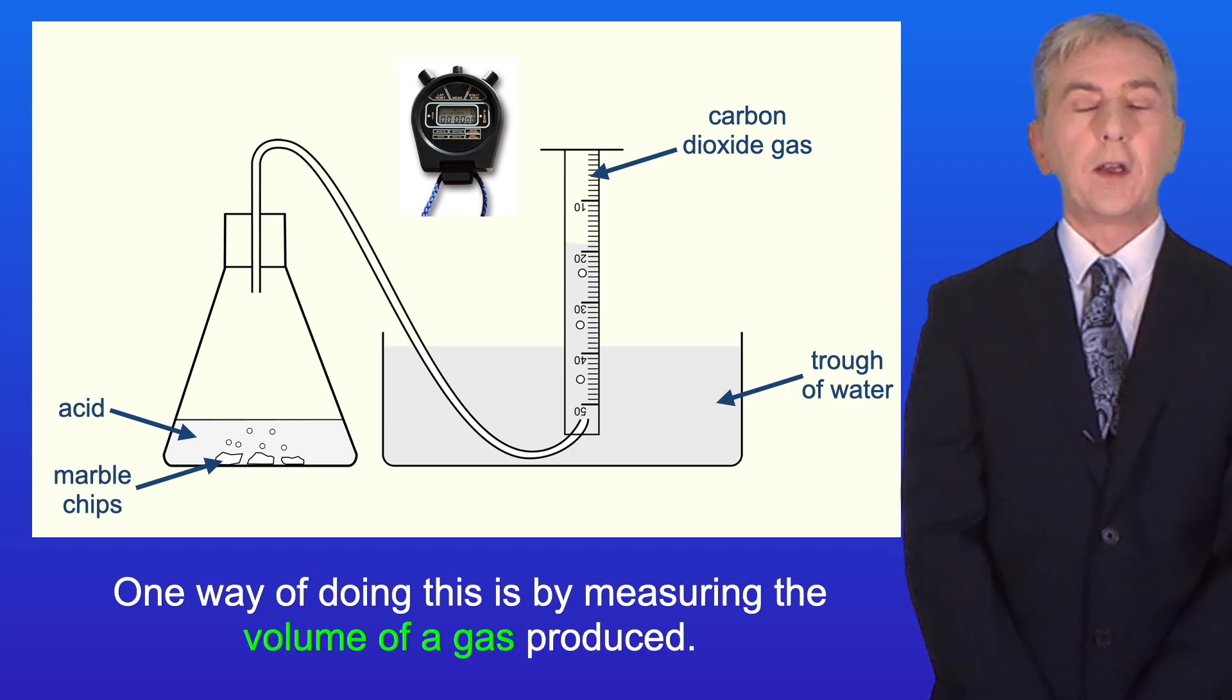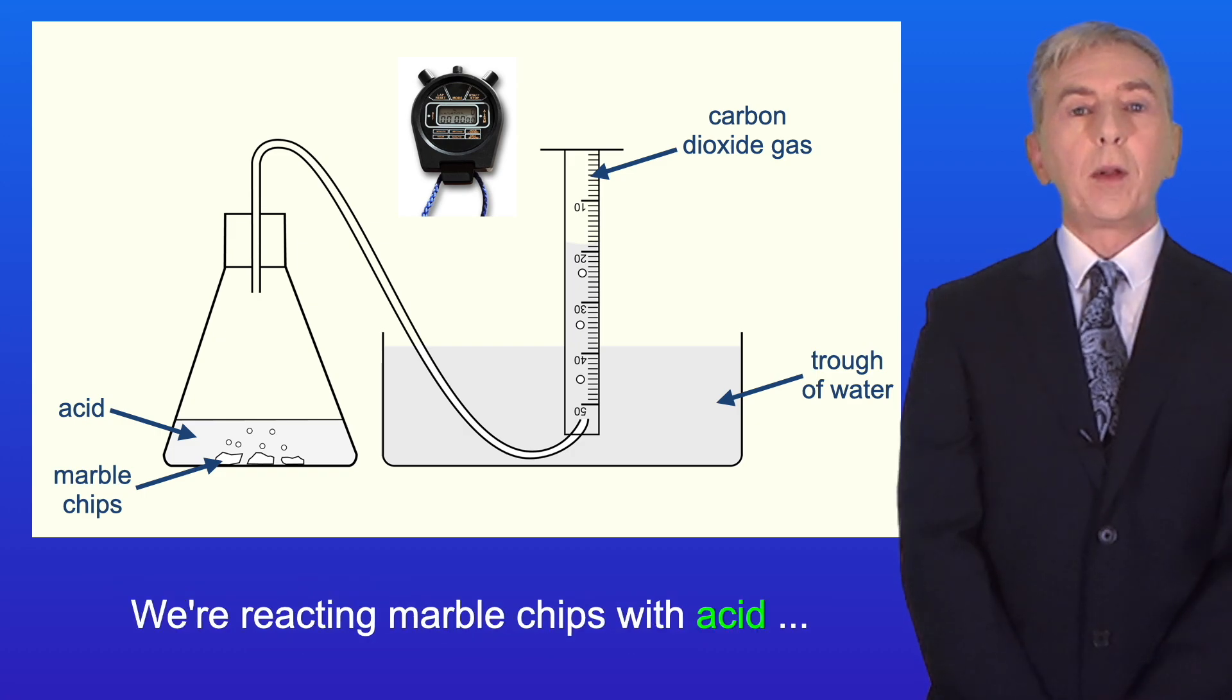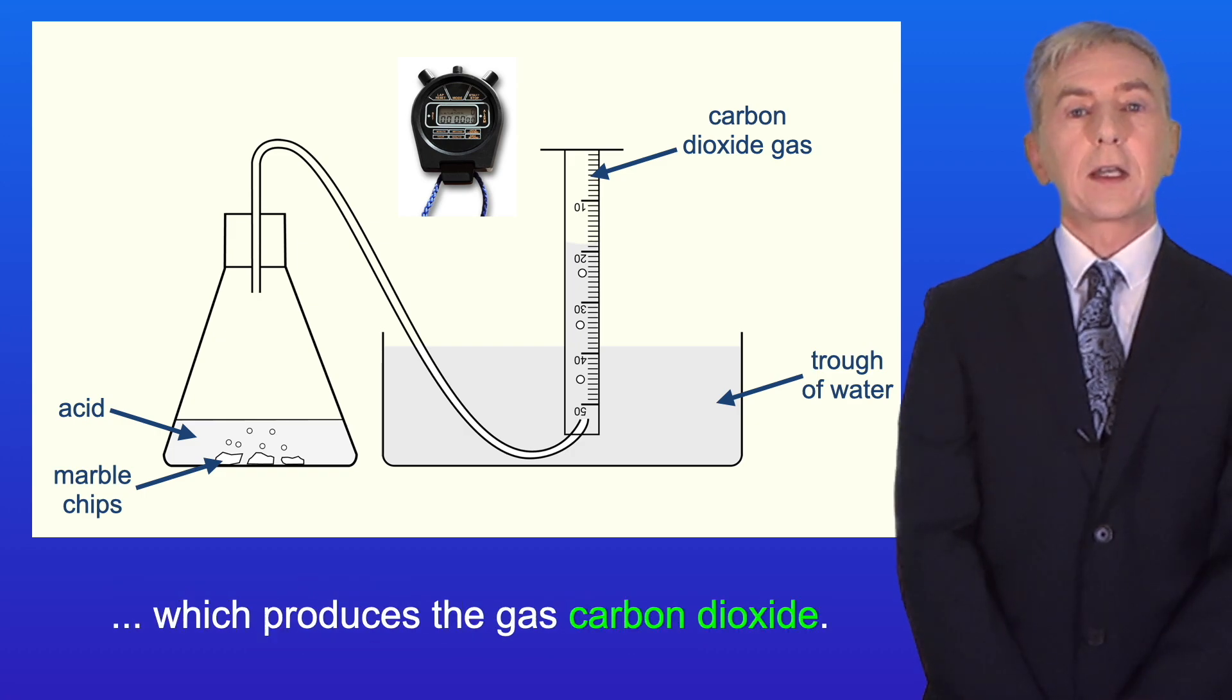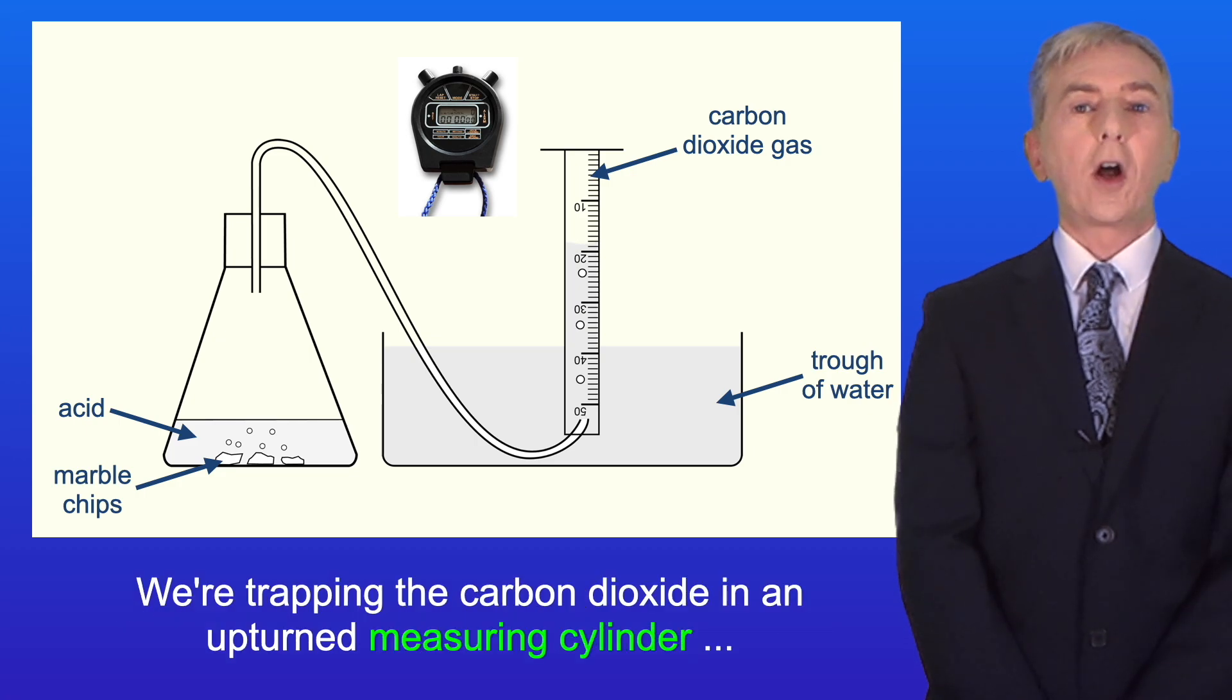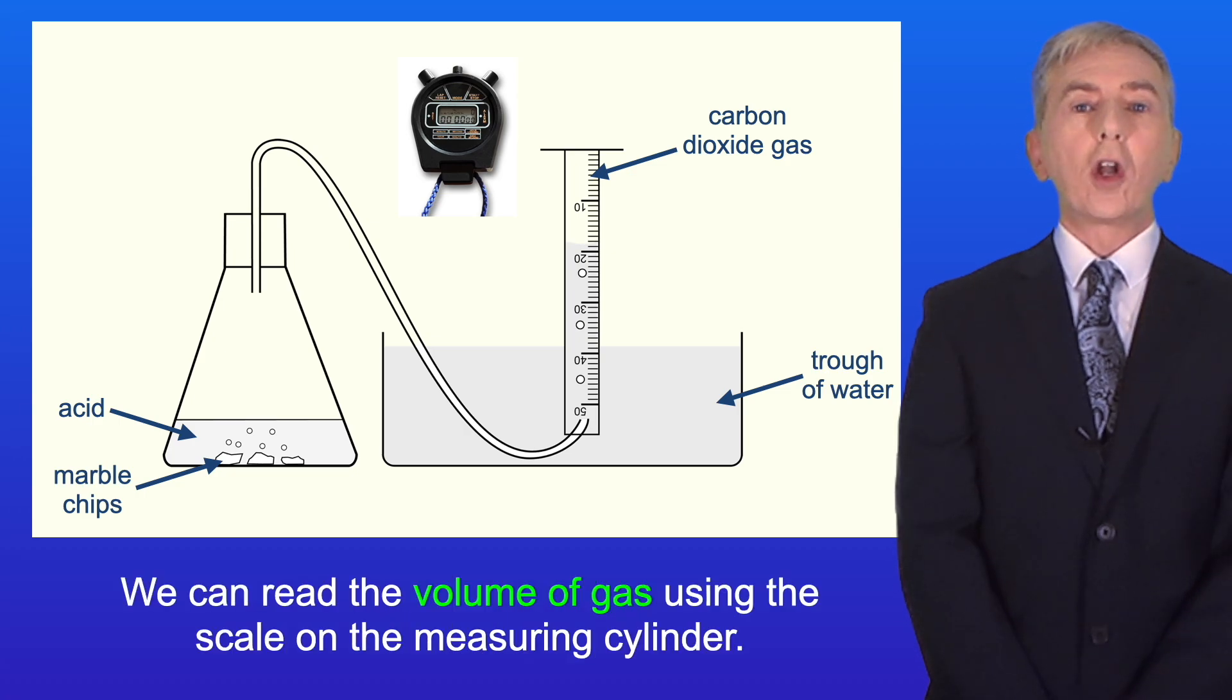One way of doing this is by measuring the volume of a gas produced and I'm showing you that here. We're reacting marble chips with acid which produces the gas carbon dioxide and we're trapping the carbon dioxide in an upturned measuring cylinder in a trough of water. We can read the volume of gas using the scale on the measuring cylinder.